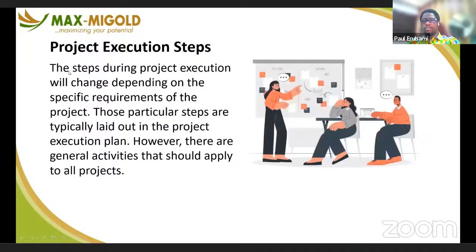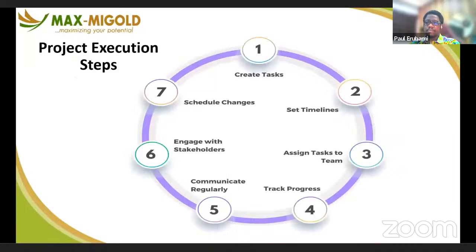Project execution steps will change depending on the specific requirements of the project, typically laid out in the project execution plan. However, there are general activities that apply to all projects. One of the first steps is to create the tasks — every task required for the project to be successful needs to be broken down into a set of manageable tasks.